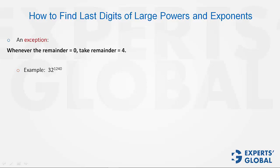Let's take an example: 32 raised to power 1240. Step 1: the base is 2. Step 2: the remainder is 0, so we won't take 0 - we'll take it as 4. Step 3: 2 raised to power 4 is 16. Therefore, the last digit is 6.